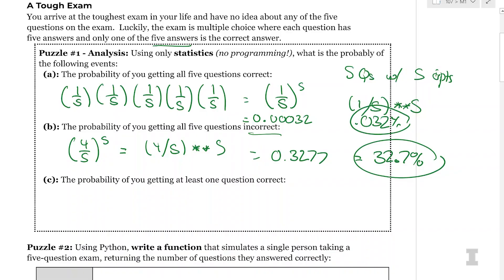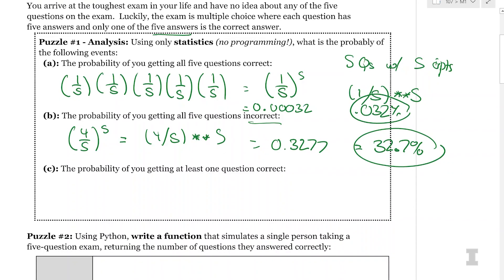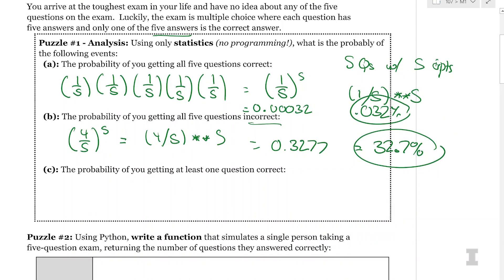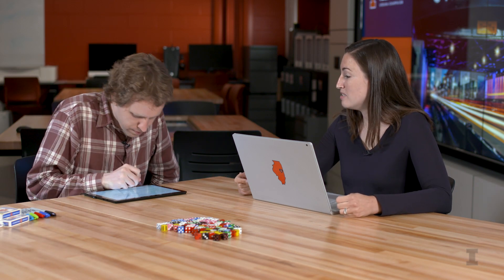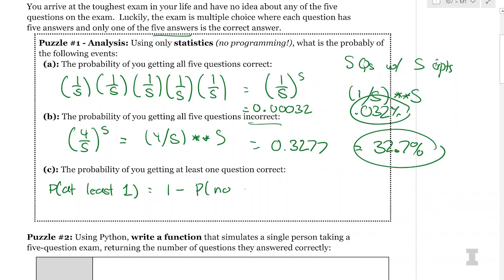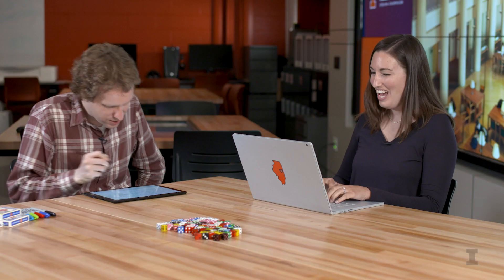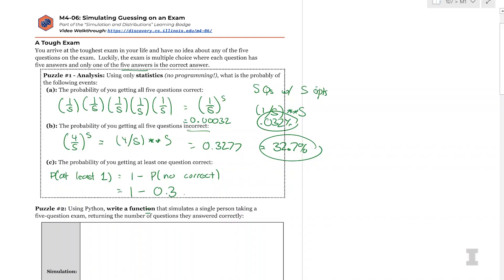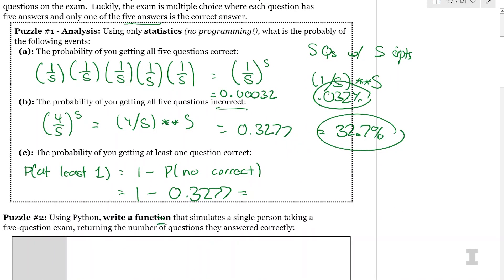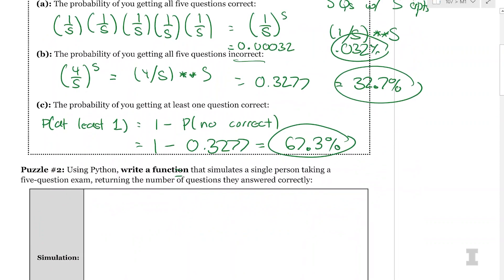And then the last question, the probability of you getting at least one question correct. So at least one is complicated. That means we could get one question correct, we could get two or three or four or five correct. So let's go ahead and look at the complement. I can actually do one minus the probability of getting none correct to get my answer. And we already know the probability of getting none correct, that was 32.7 percent. So one minus 0.3277 is 67.3 percent. So that's over 50 percent.